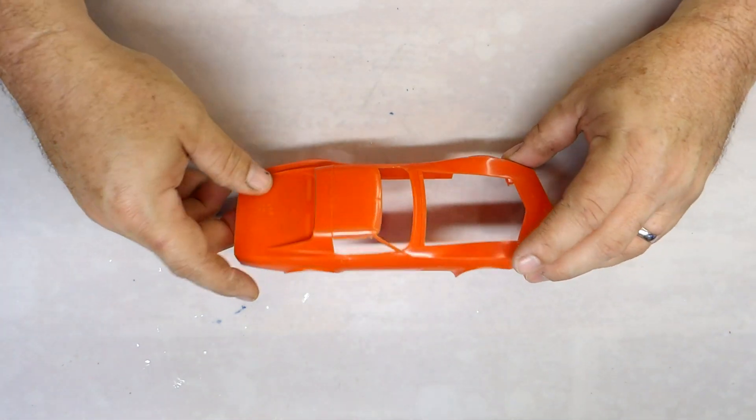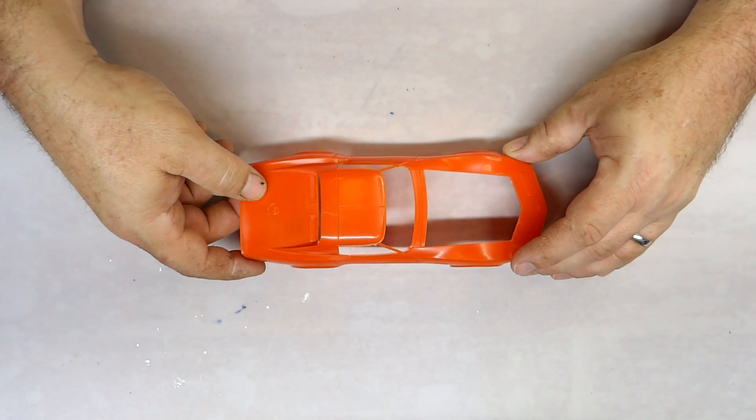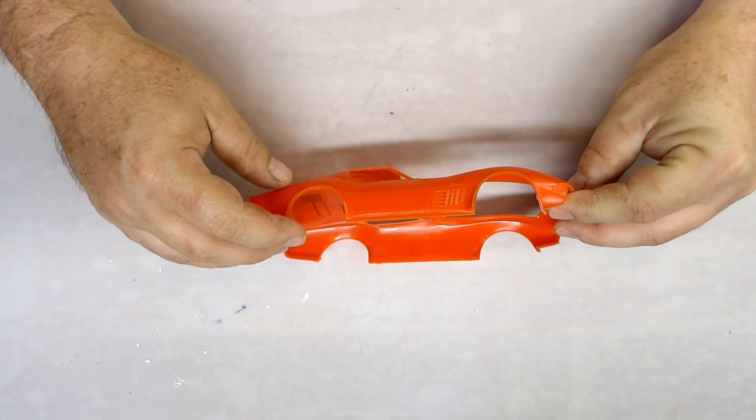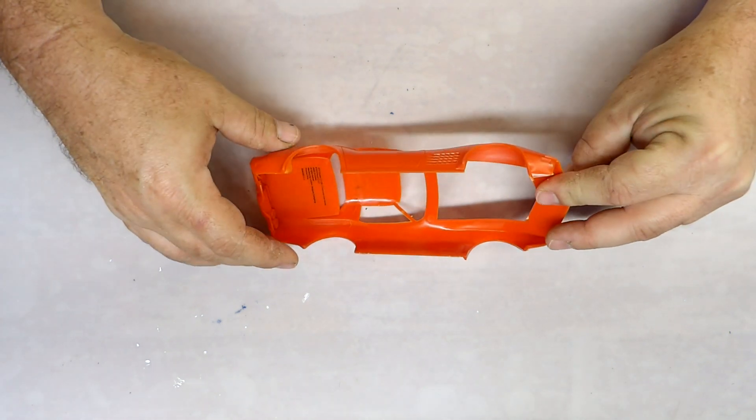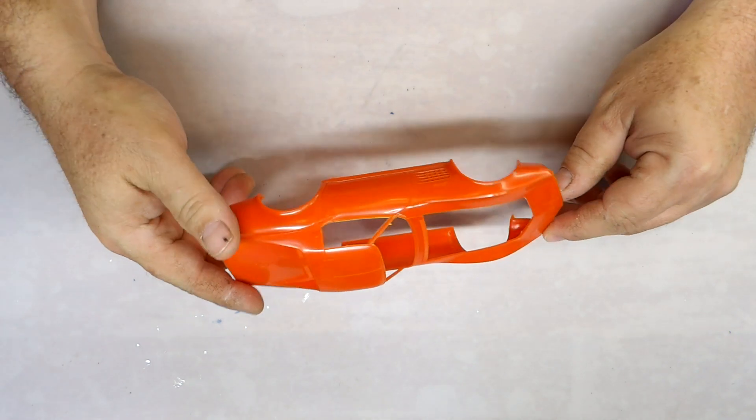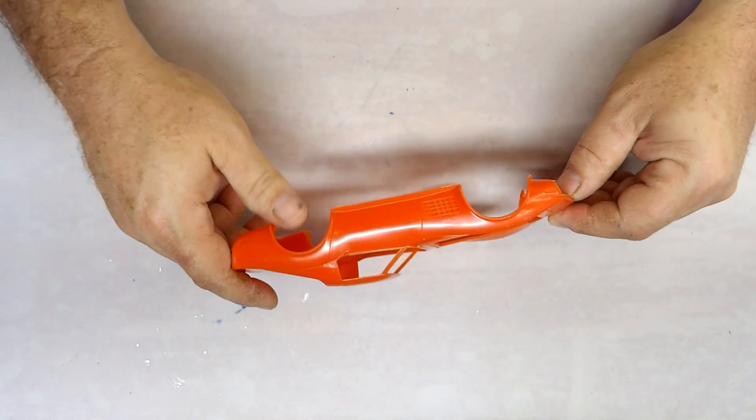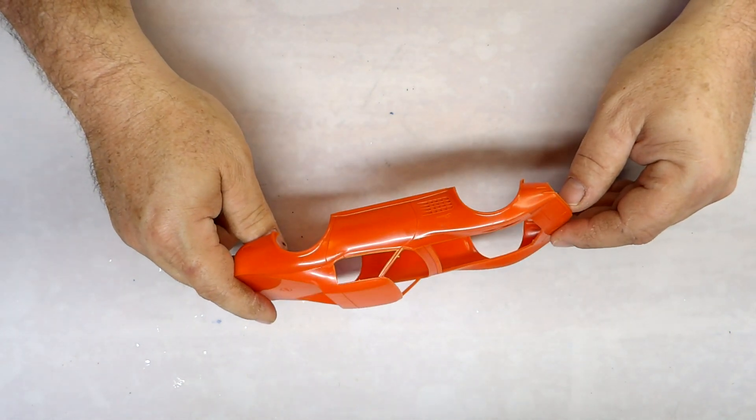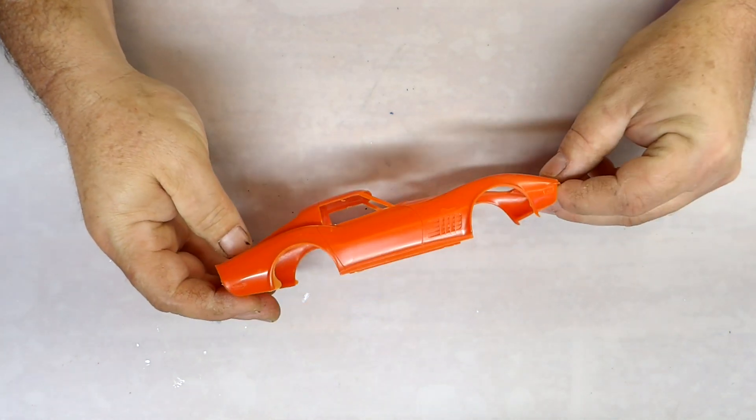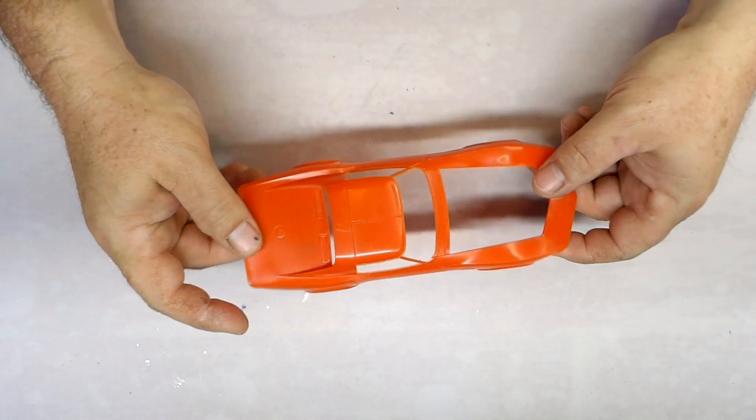Here's the body, it's molded in orange so we got some flashing on here to clean up. I haven't done a Corvette in so long, so it will be a little bit different. I've done some newer Corvettes but never this body style I don't think. So I've been looking forward to doing it.